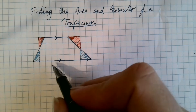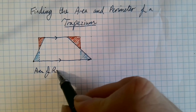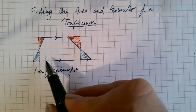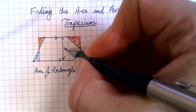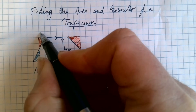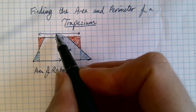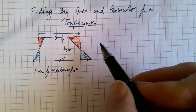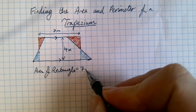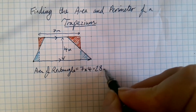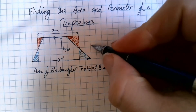So the area of the rectangle is length times width. The width there is four — call that four meters — and the length across is seven meters. So that's seven times four, which is 28 square meters. That's going to be the same area as the trapezium. Now I'm going to introduce you to the formula for the area of a trapezium.